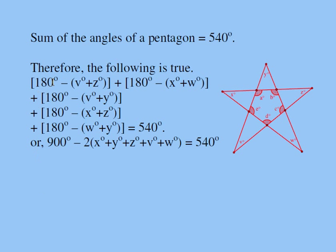If you add 180 five times, you're going to get 900. And take a look over here. You have two v's, two z's, two y's, two x's, two w's, which will be equivalent to minus two times x plus y plus z plus w plus v. And the right-hand side is still 540.